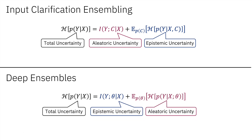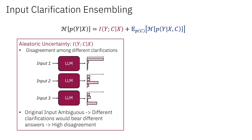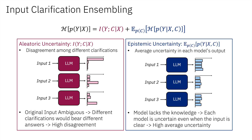However, if we compare the two approaches, we can find that the correspondences of the epistemic and aleatoric uncertainties are flipped. The first term, which still depicts the disagreement among the different outputs, now is connected with the aleatoric uncertainty. This is because if the input is ambiguous, different clarified inputs would have very different meanings and result in very different answers. The second term, which still depicts the average uncertainty, now is connected to epistemic uncertainty, because each clarified input should be clear and bear no ambiguity — so if each model is still uncertain, it could only result from the lack of model knowledge.